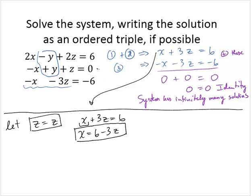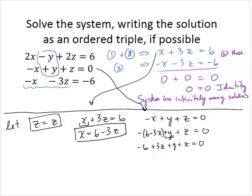I'm going to use the second original equation that says negative x plus y plus z equals 0. If z is some number, then x is 6 minus 3 times that number, and we still have y here. So I just made a substitution for x. I need to solve for y. That's negative 6 plus 3z plus y plus z equals 0. So I can rewrite this as y minus 6 plus 4z equals 0, which means that y would equal positive 6 minus 4z.